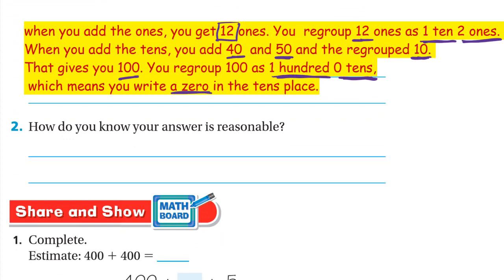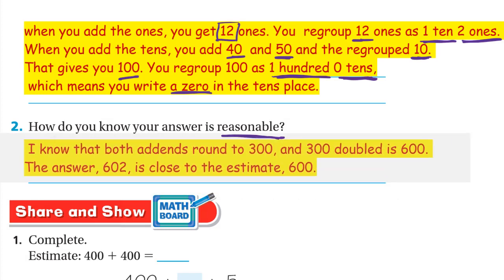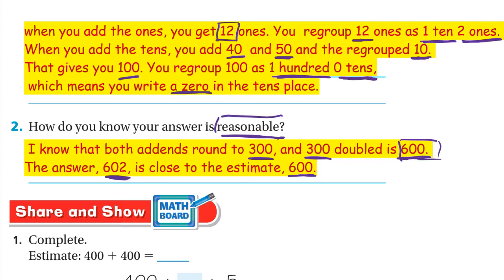How do you know your answer is reasonable? I know that both addends rounded to 300. Three hundred plus 300 is 600, which is our estimate from the beginning. The answer 602 is close to the estimate of 600, so if your answer is close to the estimate, then your answer is reasonable.